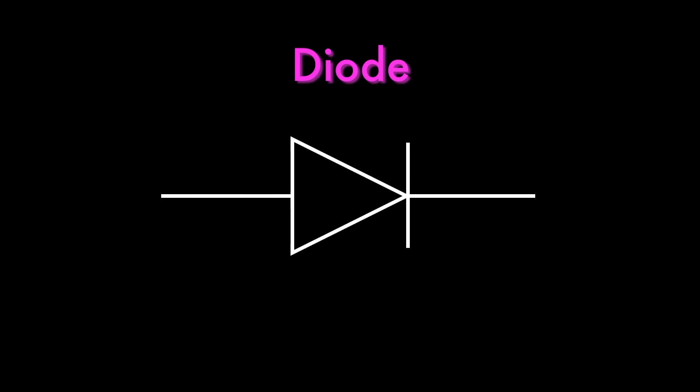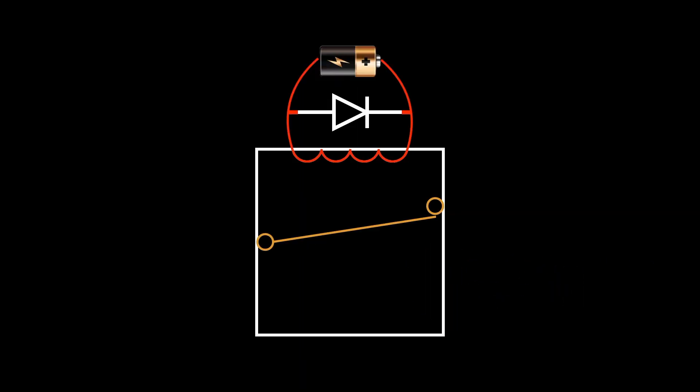A diode allows current to only flow one way through it. The trick is to place the diode in parallel with the relay's coil terminals, but in the wrong direction.